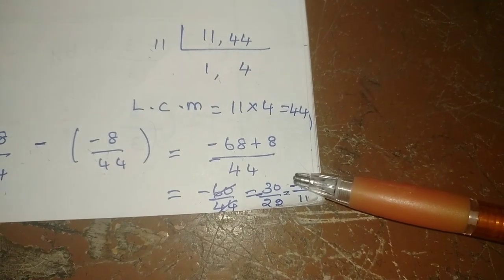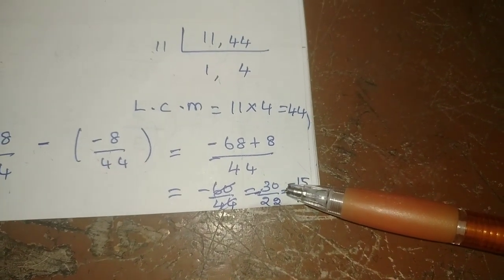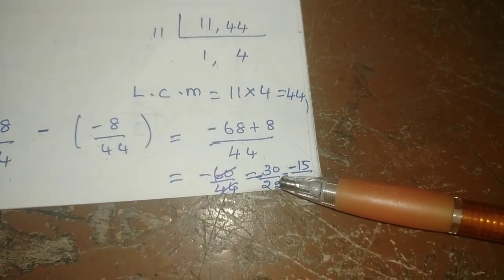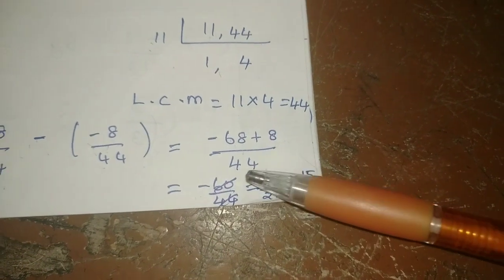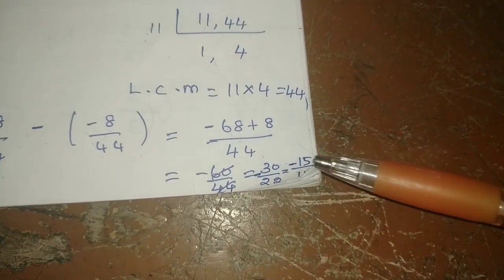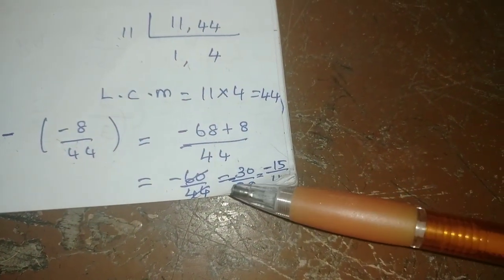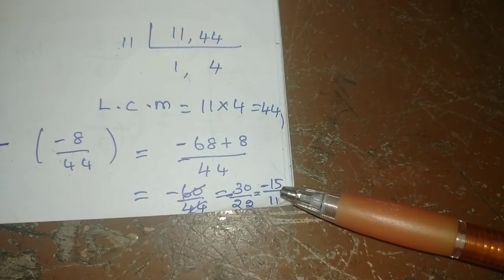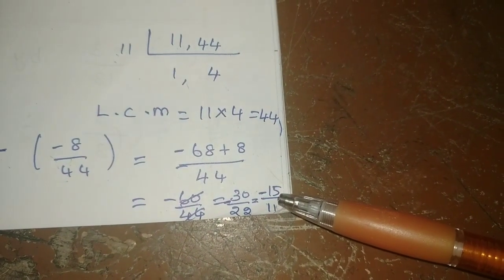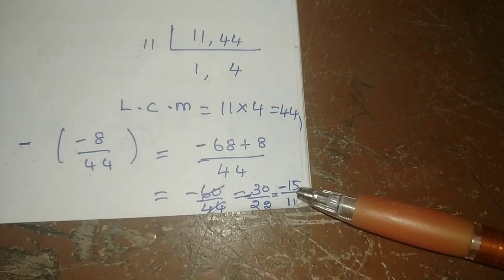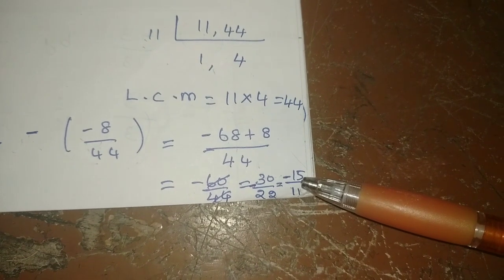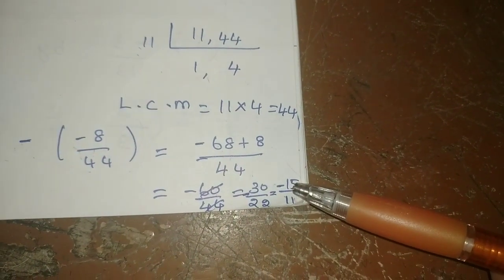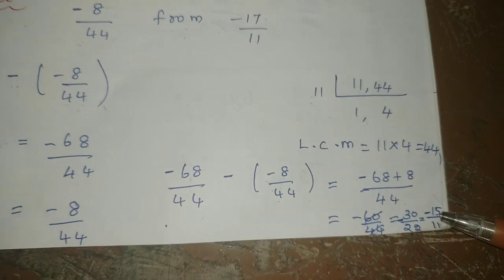The denominator is 44. Now reduce the number. 2 tables: 2 twos are 4, 3 twos are 6, this is 0. Now reduce: 1 two is 2, 1 two is 2, that gives 11. Next, 1 two is 2, balance 1, 5 twos are... The question has a minus, so the answer is minus. The answer carries the minus sign. Clear?